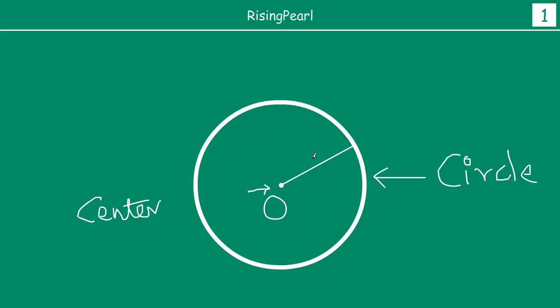And this distance — we have randomly taken a point here, let's say this point is A. Then the distance between the center and any point on the circle is the radius of a circle.